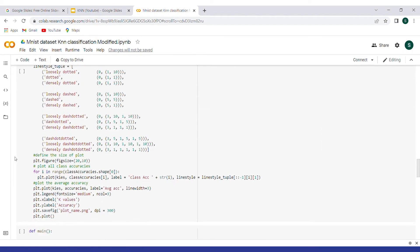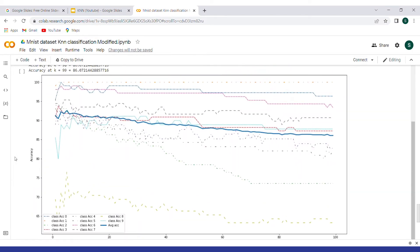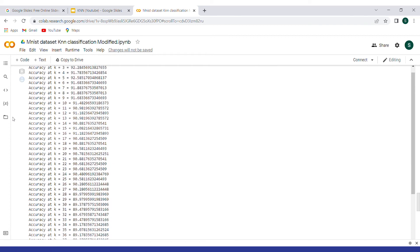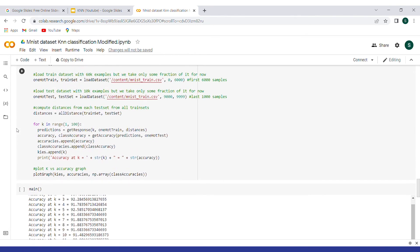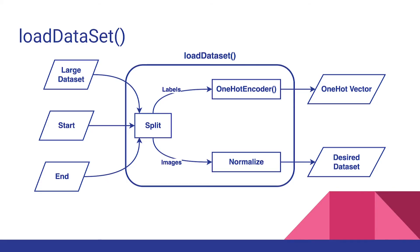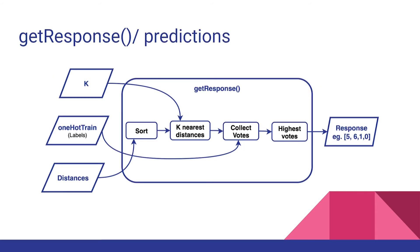We can find the implementation in the Colab link attached in the description. It's a simple implementation. We also have the flowchart for each function we define in the slides.